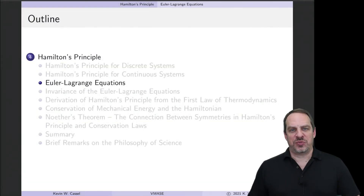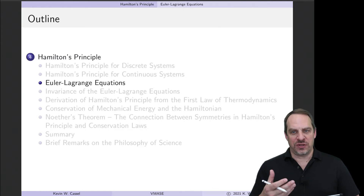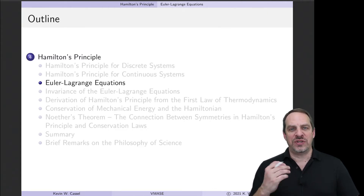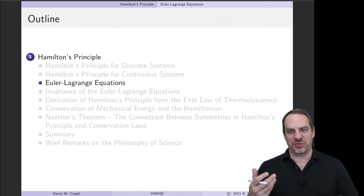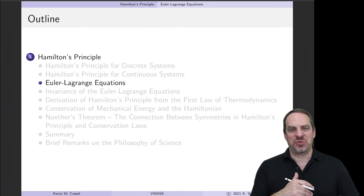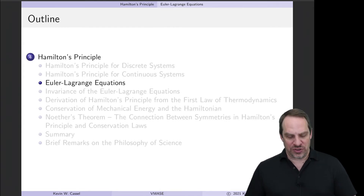In all of the examples of Hamilton's Principle so far, we've taken the variation of the integral of the Lagrangian and set it equal to zero. We haven't taken advantage of the fact that we may know the general form of the Euler equation for Hamilton's Principle. In this section we're going to determine what that is. We'll call it the Euler-Lagrange equation — it is just the Euler equations from chapter two, but applied specifically to Hamilton's Principle.